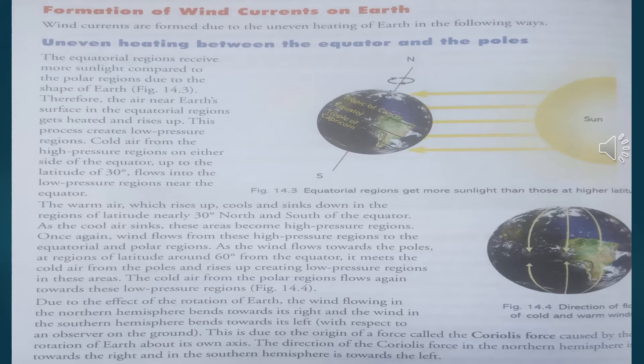Wind currents are formed due to the uneven heating of the Earth. The meaning of uneven heating is that whenever sunlight falls on the surface of the Earth, it does not fall equally — some areas get more sunlight and some areas get less. So some areas become warmer compared to others, and this uneven heating is the main reason why wind currents form.